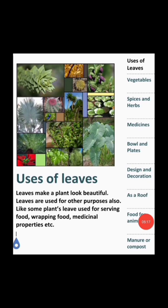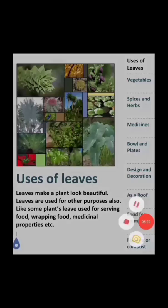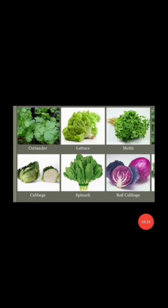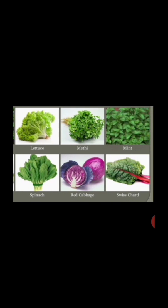Leaves are useful in many ways. Leaves are used as a vegetable. For example: coriander, lettuce, methi, cabbage, spinach, red cabbage, mint, and swiss chard. These are some examples of leaves which we use as vegetables.